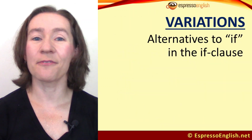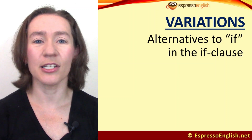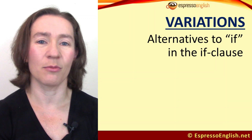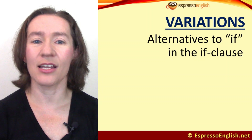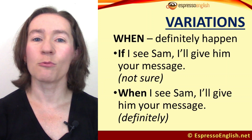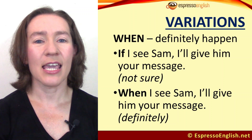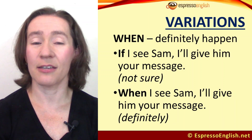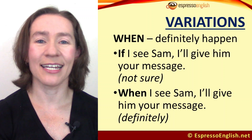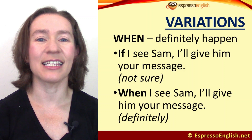Now let's look at some variations in first conditional sentences. It is possible to use other words instead of 'if' in the condition part, like 'when,' 'as soon as,' and 'unless.' We use 'when' when the condition will definitely happen in the future. Compare: 'If I see Sam, I'll give him your message' — I'm not sure if I'll see him. 'When I see Sam, I'll give him your message' — this implies I will definitely see Sam.